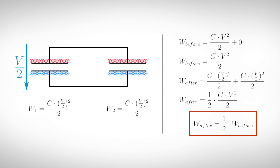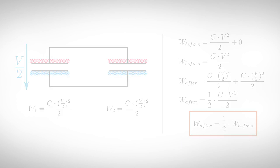So, where did the second half of the energy disappear? This problem is known as the famous capacitor paradox and the answer to it is simple.